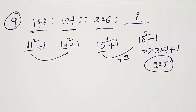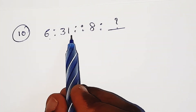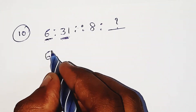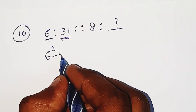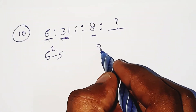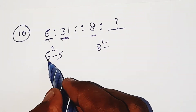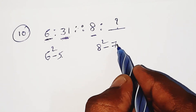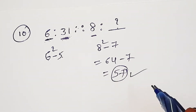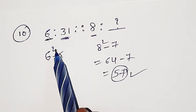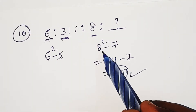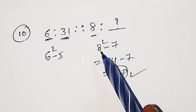Next problem: 6 colon 31, proposition 8 colon missing number. 6 squared is 36, minus 5 is 31. 8 squared is 64, minus 7 is 57. 57 is the answer.